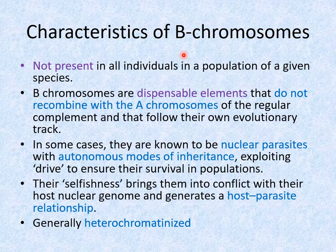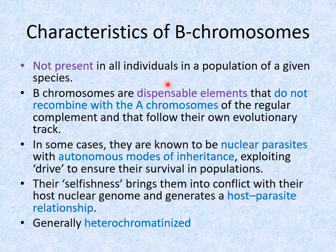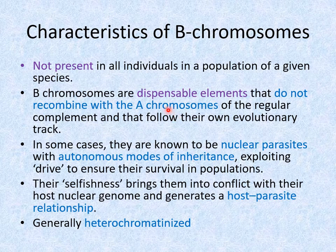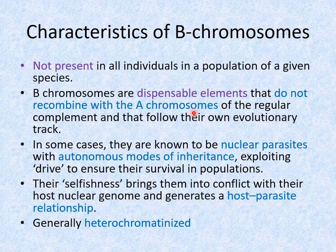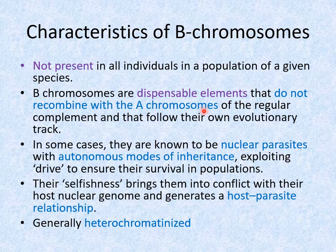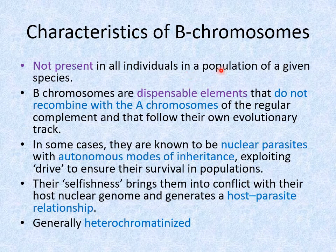The basic characteristics of B chromosomes are: first, they are present in a subset of the population — not in all individuals. Second, being absent from all individuals means they are dispensable elements. Third, they do not recombine with the A chromosomes, and hence there is no recombination between the A and B type chromosomes.